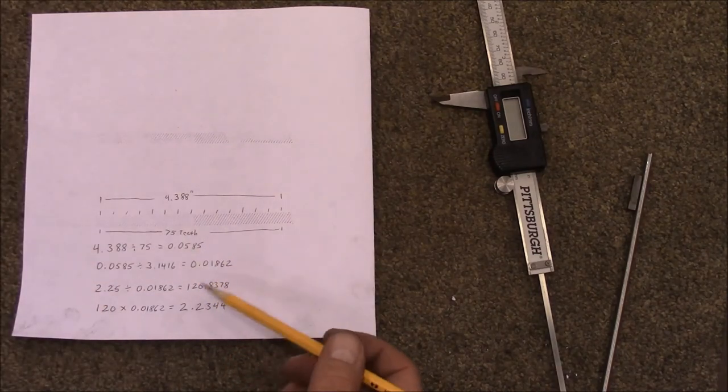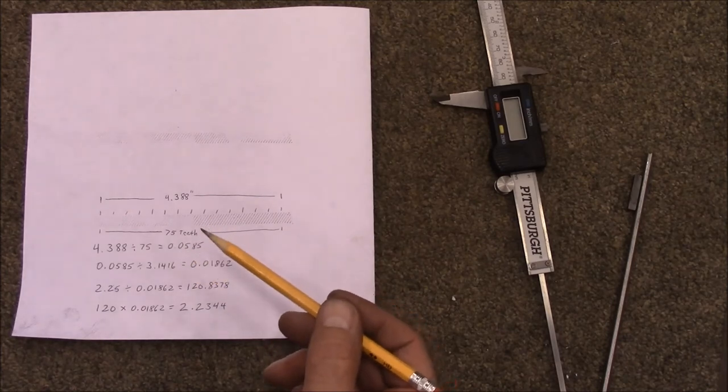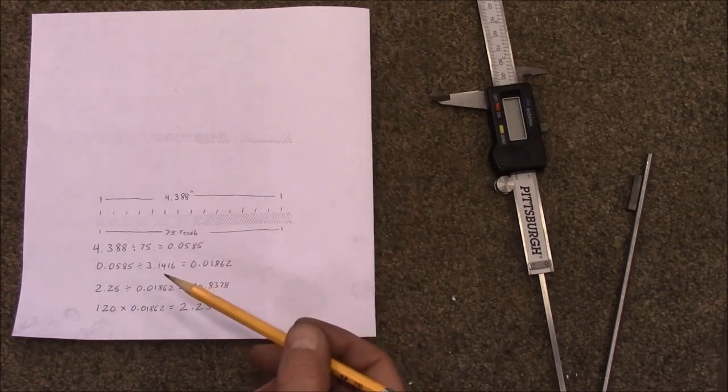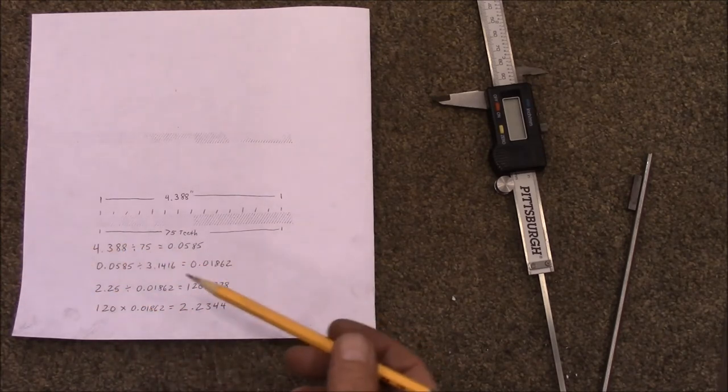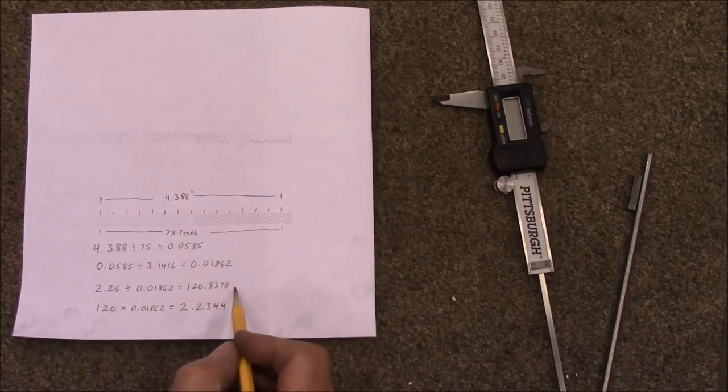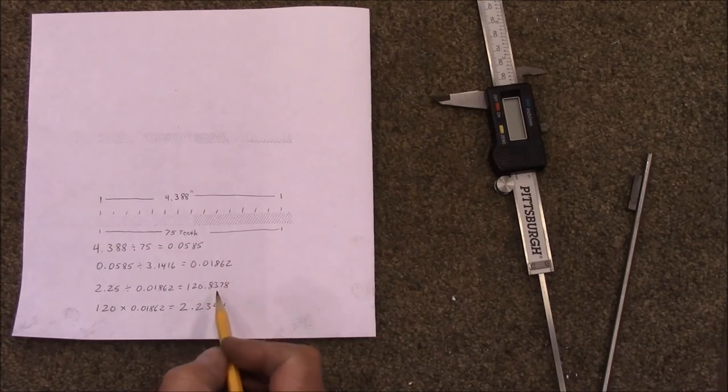This number here is telling you the distance apart of the ridges of your knurl, each one of these ridges, how far apart they are. So what you want is you want it to come all the way around the part and then catch and fall right back in the ditch that the one right before it made.